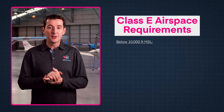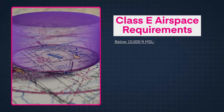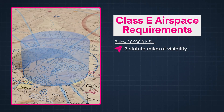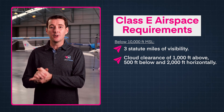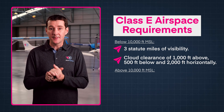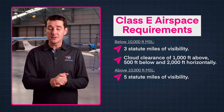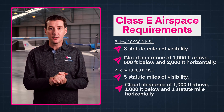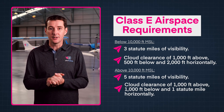There are no entry requirements for Class E, but there are VFR minimums. If you are below 10,000 feet MSL, the weather minimums are the same as Class C and D: 3 statute mile visibility, 1,000 feet above, 500 feet below, and 2,000 feet horizontally from clouds. If you're above 10,000 feet MSL, the minimums increase to 5 statute mile visibility, 1,000 feet above, 1,000 feet below, and 1 statute mile horizontally from clouds.